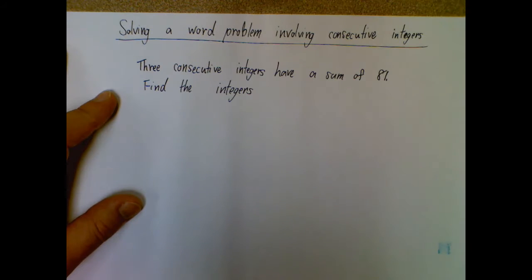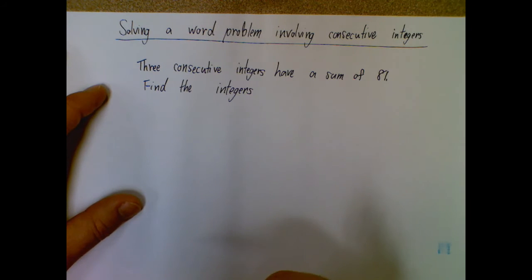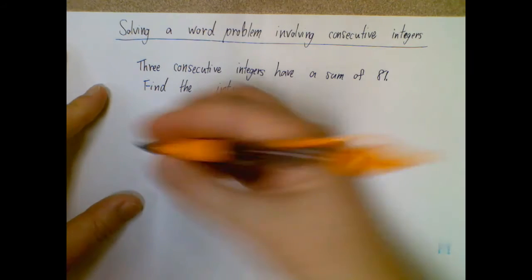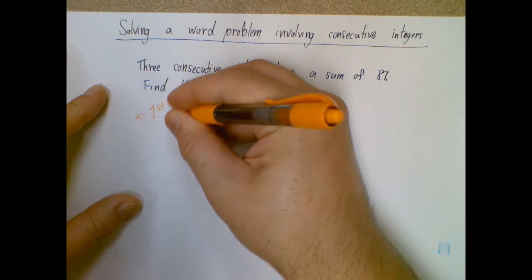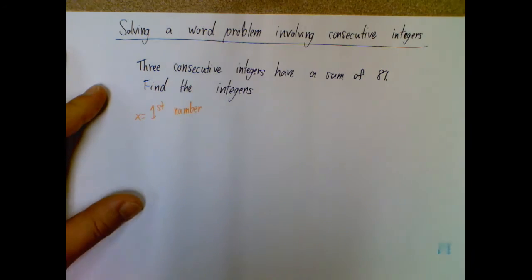So thinking about that, how can I express that without using three separate variables? So what I want to do is I'm just going to pick any first number and I'm going to call that x.